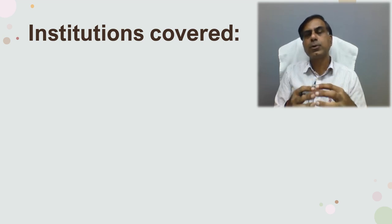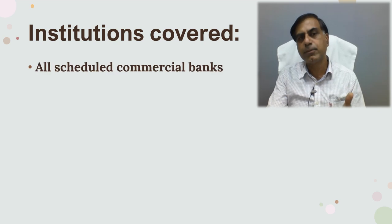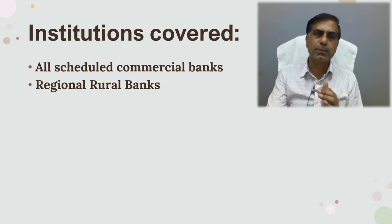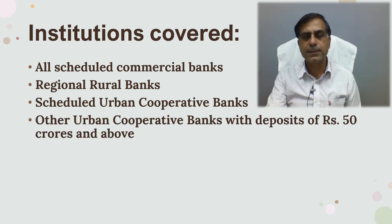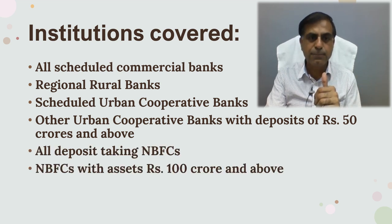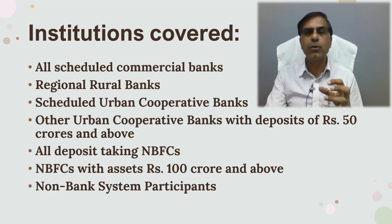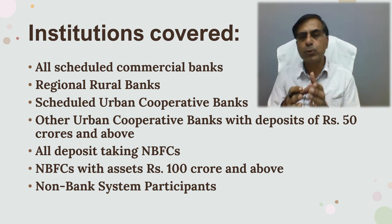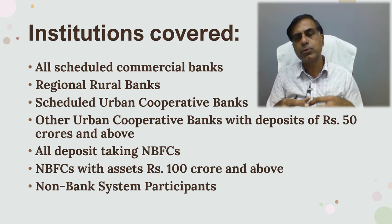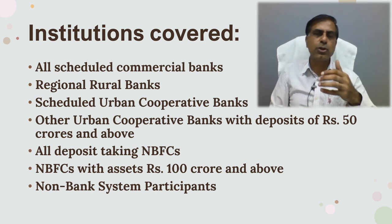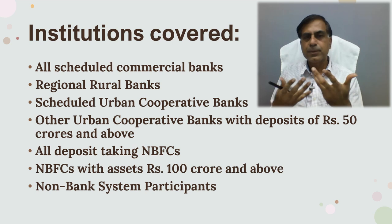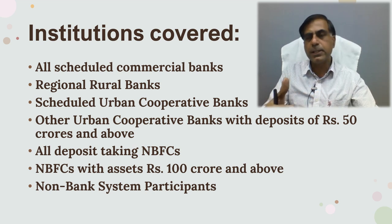Institutions covered under the Integrated Ombudsman Scheme include: scheduled commercial banks, regional rural banks, scheduled urban cooperative banks, other urban cooperative banks with deposits of Rs 50 crore and above, all deposit-taking NBFCs, and NBFCs with assets of Rs 100 crore and above or non-bank system participants. If aggrieved against any of these, you can approach RBI through this scheme, where an Ombudsman will look into your query and seek a resolution.